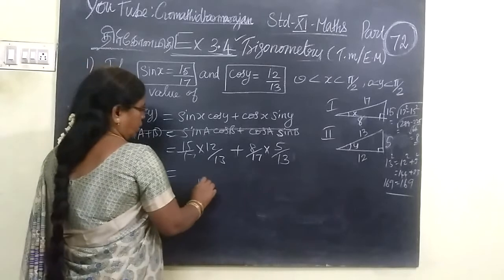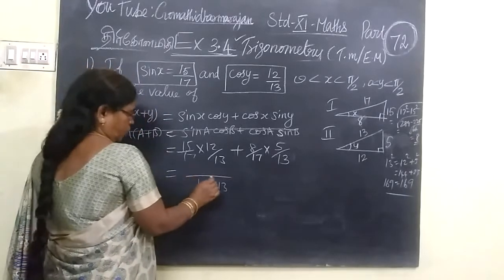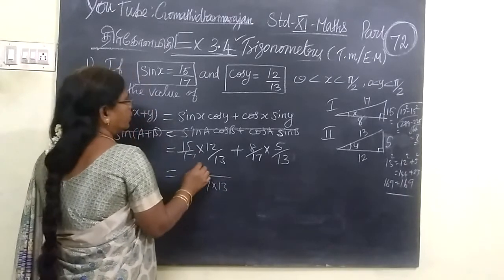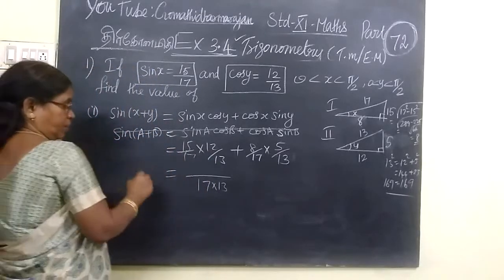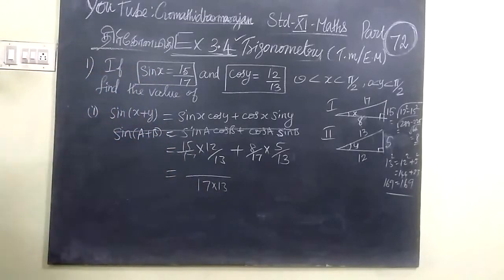Sin y is opposite by hypotenuse, so opposite is 5. So you get 15 into 12 and 8 into 5.